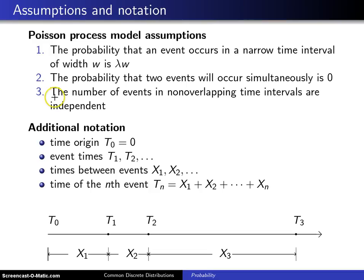The third assumption is the number of events in non-overlapping time intervals are independent. So there is a memoryless property that goes on here, which says if I have six events in one time interval, that has nothing to do with the number of events that occur in another time interval that doesn't overlap with the first interval.